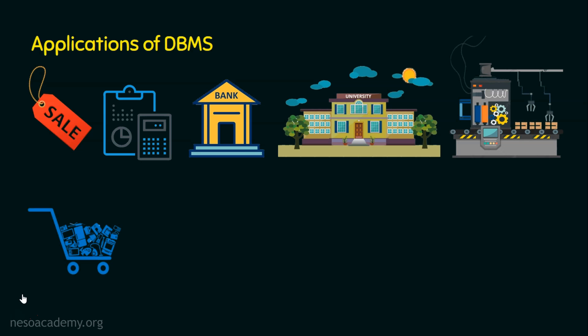Coming to the next application area, which is online stores. In this contemporary world, we mainly depend on online stores like Amazon, Flipkart, and Snapdeal. Online stores maintain sales information, online order details, user login details, recommendation details, and reviews about products by customers. That's why online stores are also one of the important applications of database management systems.